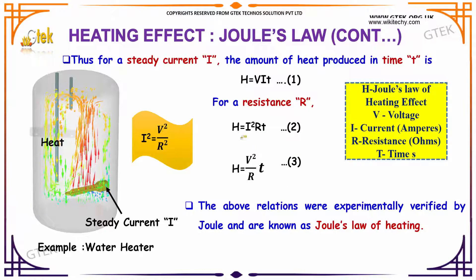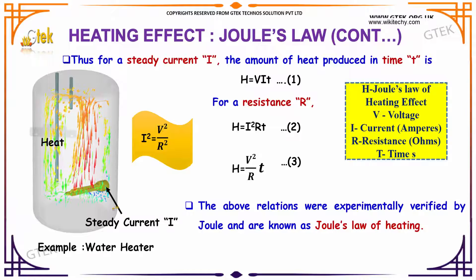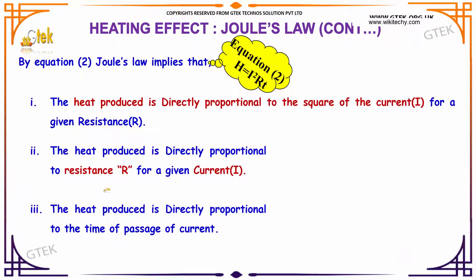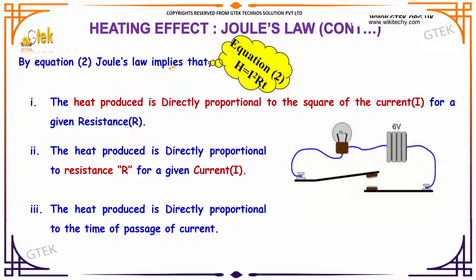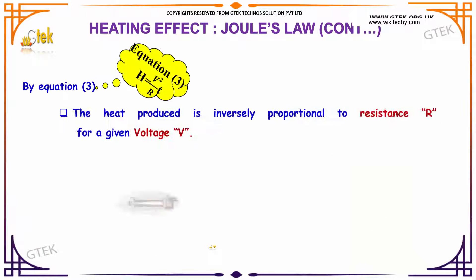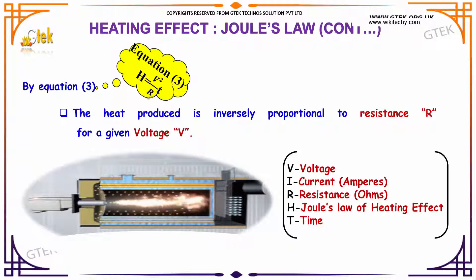The above experiment was verified by Joule, and the law is known as Joule's law of heating. You can see a water heater here, which produces heat energy from electrical energy. From equation 2, Joule's law implies H = I²RT — meaning heat is directly proportional to the square of the current I², directly proportional to resistance R, and directly proportional to time T. From equation 3, for a given voltage V, the heat produced is inversely proportional to the resistance R.